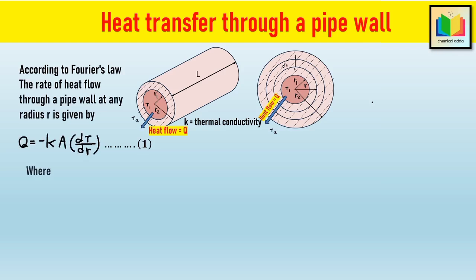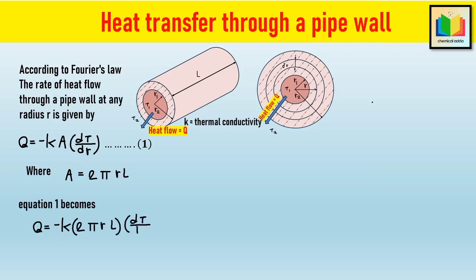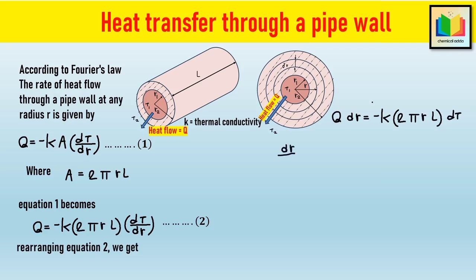Where A is the surface area perpendicular to heat flow, equal to 2πrL. Hence equation 1 becomes Q = −k·(2πrL)·(dT/dr), equation 2. To calculate the rate of heat transfer through the cylinder, let's integrate. Rearranging the terms in equation 2 gives: dr/r = −k·(2πL)/Q · dT.